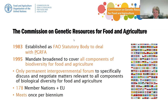The commission was established in 1983, originally as the commission on plant genetic resources. It is a statutory body of the Food and Agriculture Organization of the United Nations. A few years later, in 1999, it was decided to broaden the commission's mandate to cover all components of biodiversity for agriculture. Since then, the commission deals not only with plant genetic resources but also animal, forest, aquatic, and microorganism and invertebrate genetic resources. The commission is an intergovernmental body that specifically deals with biodiversity for food and agriculture, which makes it quite unique.